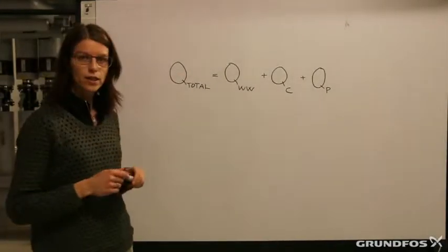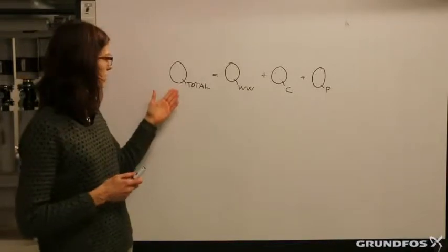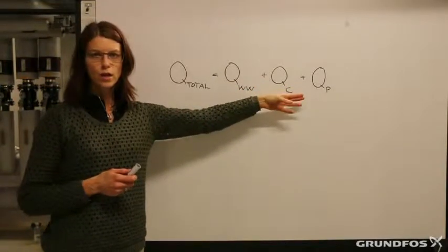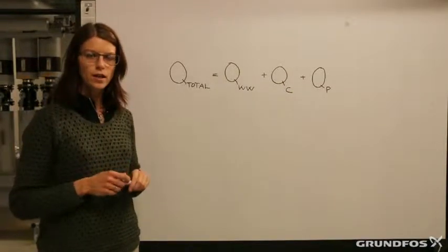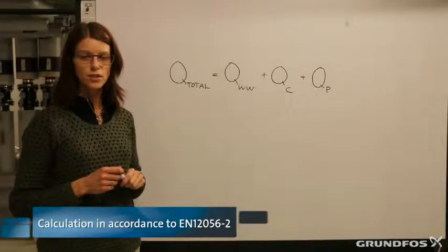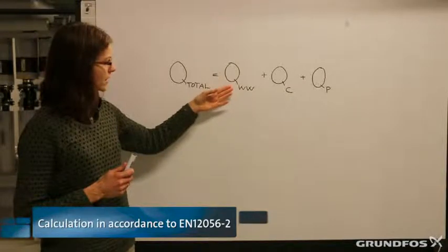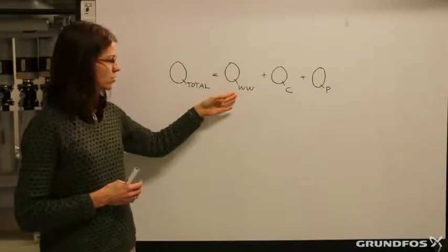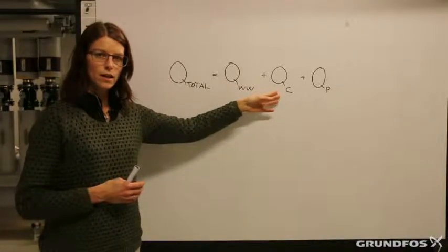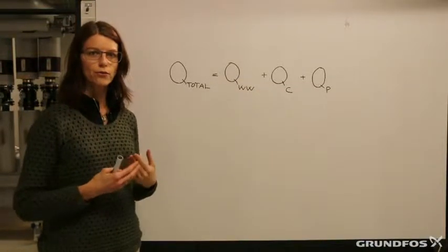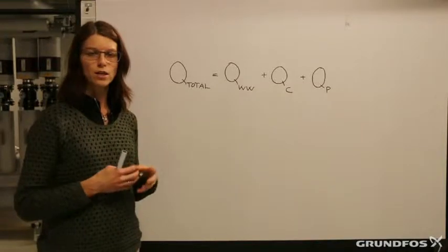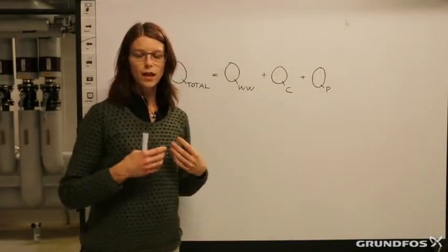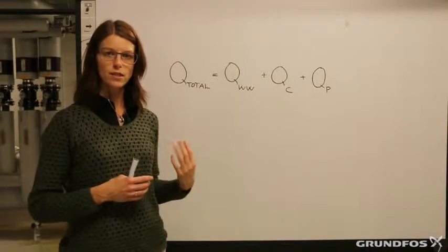The formula for the calculation of the total wastewater flow rate is shown here. Q_total equals Q_wastewater plus Q_continuous plus Q_pumping. This formula is from EN standard 12056-6-2. The Q_wastewater is the discharge from the different discharge units. The Q_C is the continuous flow rate — it could be for example from a grease separator with a nominal size of seven liters per second. And Q_P could be a pumping station adding flow to this wastewater system.